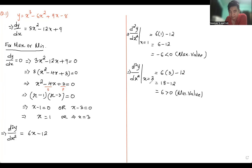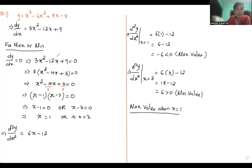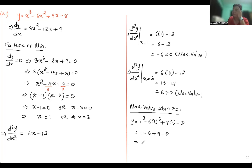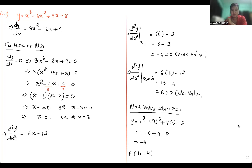First, find the maximum value. When x = 1, substitute directly: y = (1)³ - 6(1)² + 9(1) - 8 = 1 - 6 + 9 - 8 = -4. So the maximum value is -4, and in coordinate point form: (1, -4).